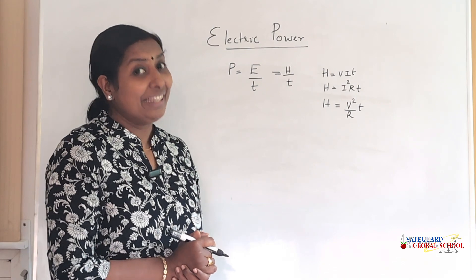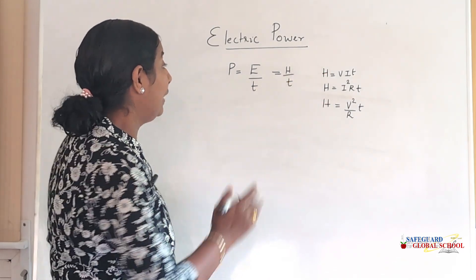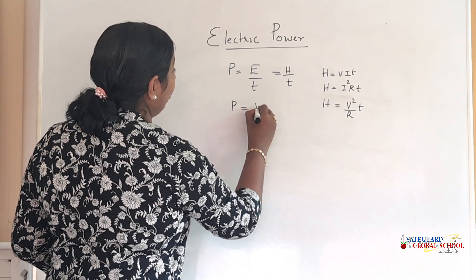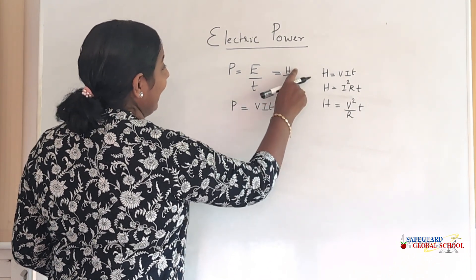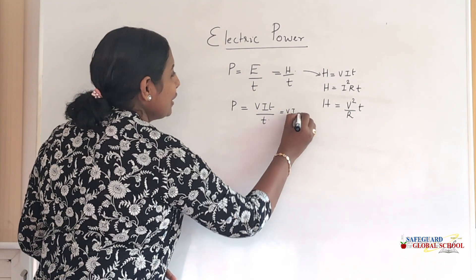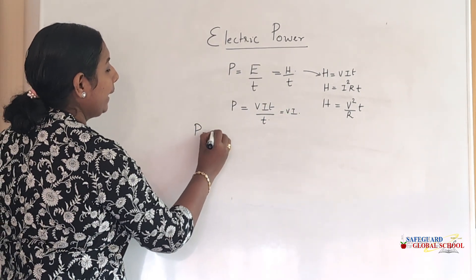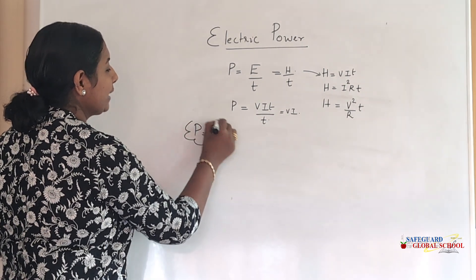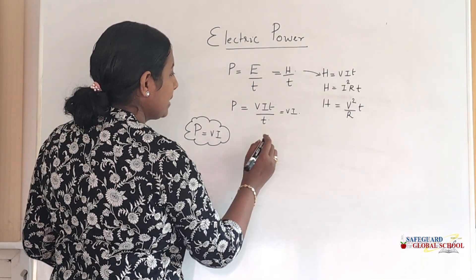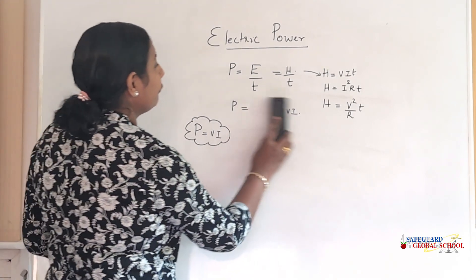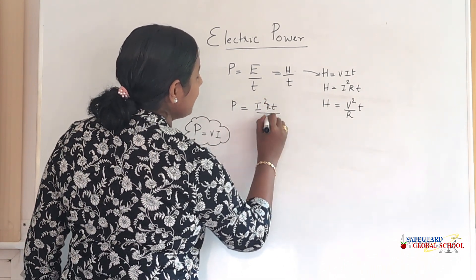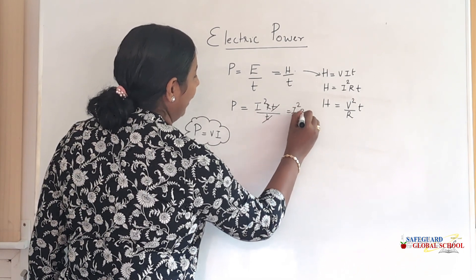When we put H into the power formula P = H/T, we get three sets of equations for power. For the first equation, P = V×I×T divided by T, so T cancels and we get P = VI. For the second equation, substituting H = I²RT, we get I²RT divided by T, and T cancels to give P = I²R.